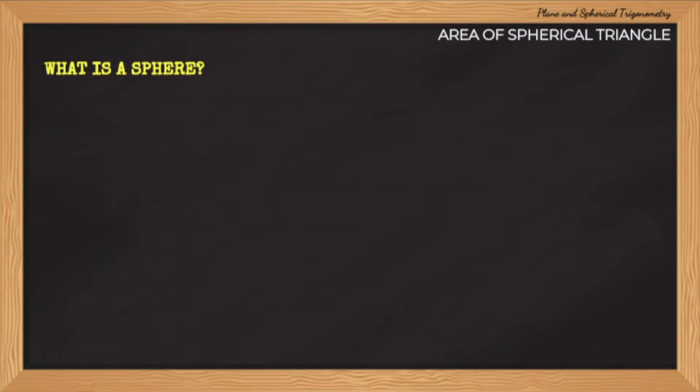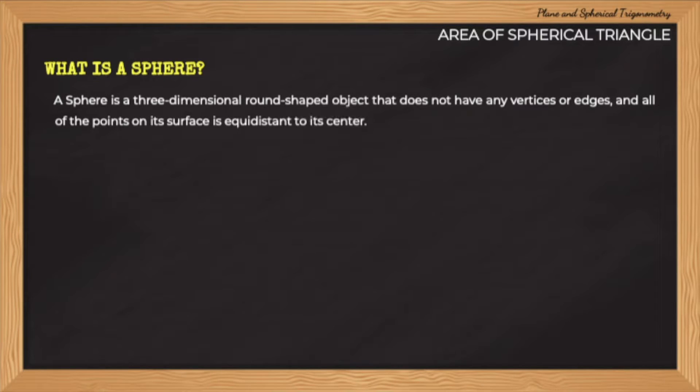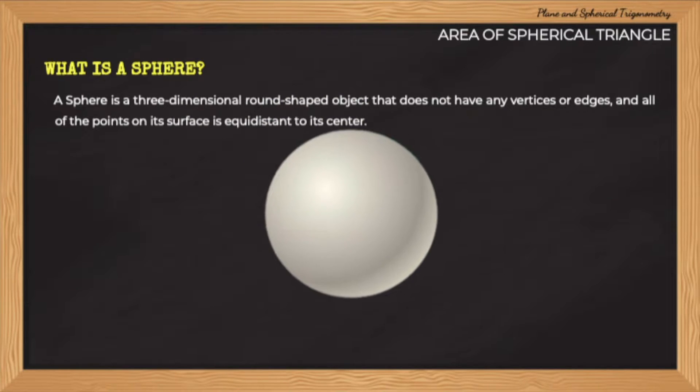Let us review what a sphere is. A sphere is a three-dimensional object with no vertices or edges and all of its points are equidistant to its center point. A ball, for example, is a sphere.